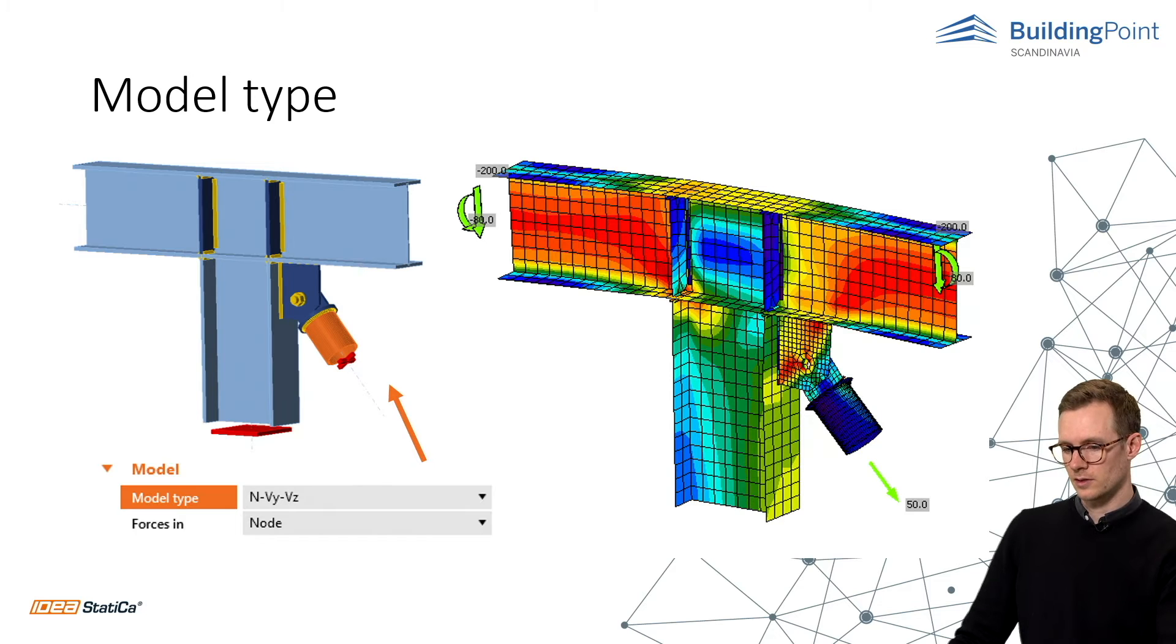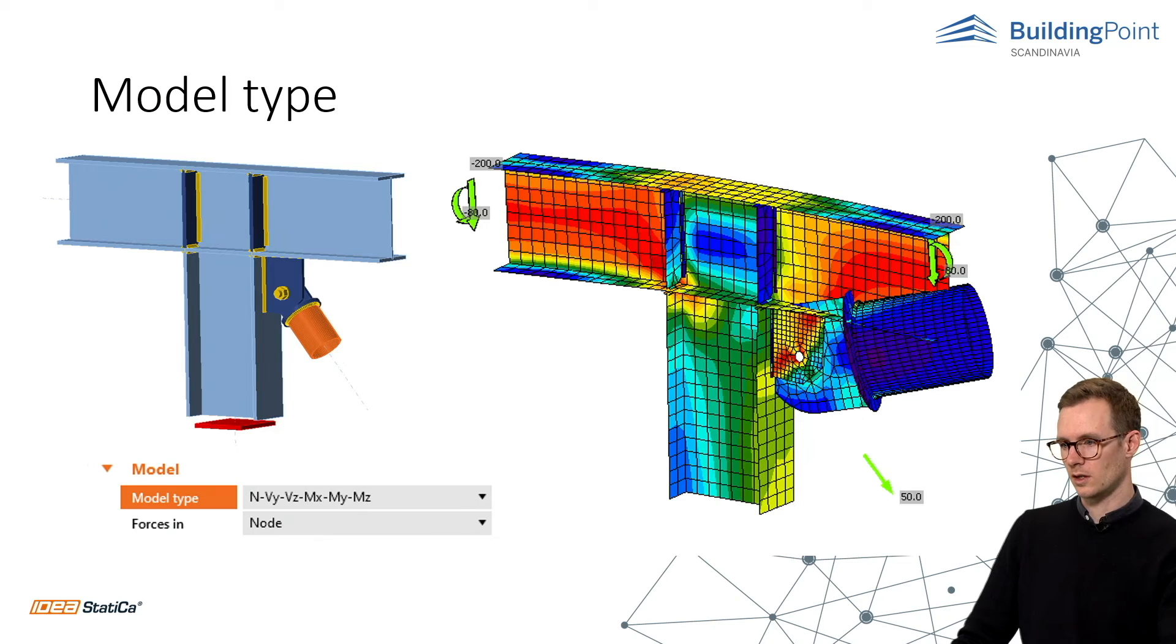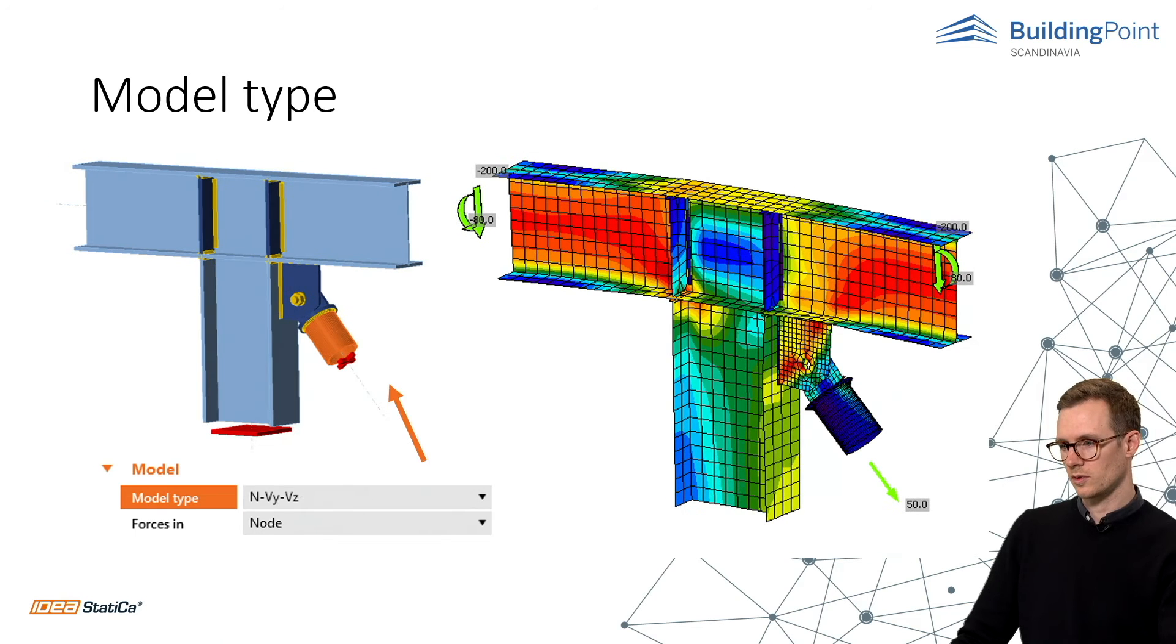So that's why we change this model type. We only allow normal forces and shear force in the y and z direction and now we have correct model and correct deformations. So you see the wrong type and the correct type for this model.